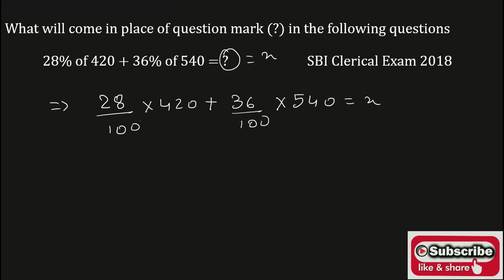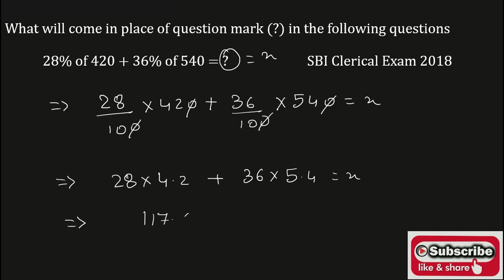Cancel the terms — 0 and 0 got cancelled. Again, 28 into 42 upon 10 becomes 28 into 4.2, plus 36 into 54 upon 10 becomes 36 into 5.4, is equal to x. Multiplying these terms: 28 into 4.2 is 117.6, plus 36 into 5.4 is 194.4, is equal to x.